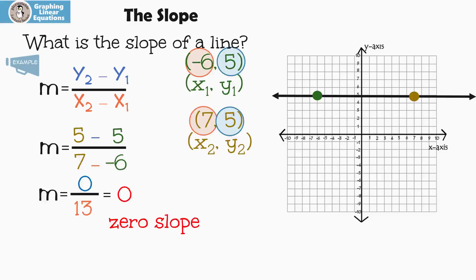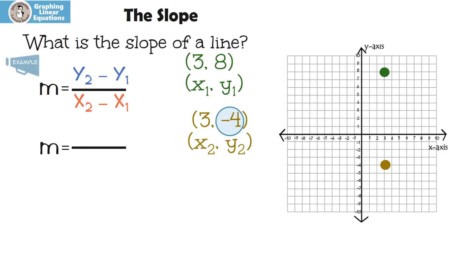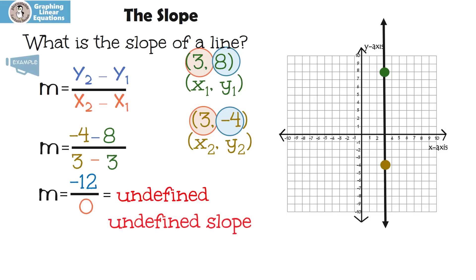Let's look at one more. Here's my first ordered pair, x1, y1, and here's my second ordered pair, x2, y2. Let's do the formula: y2 minus y1 over x2 minus x1. Negative four minus eight is negative twelve, and three minus three is zero. We can't divide by zero, so this is an undefined slope.